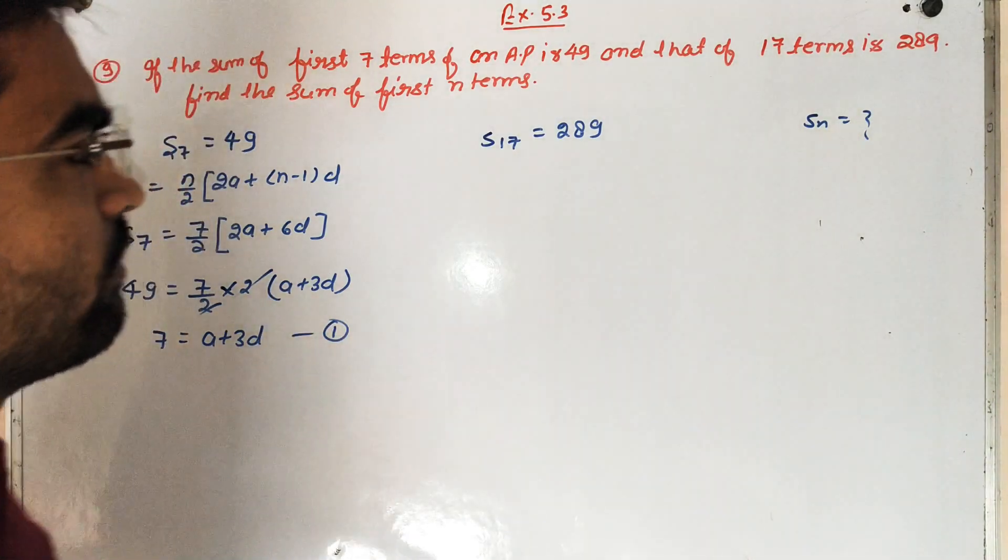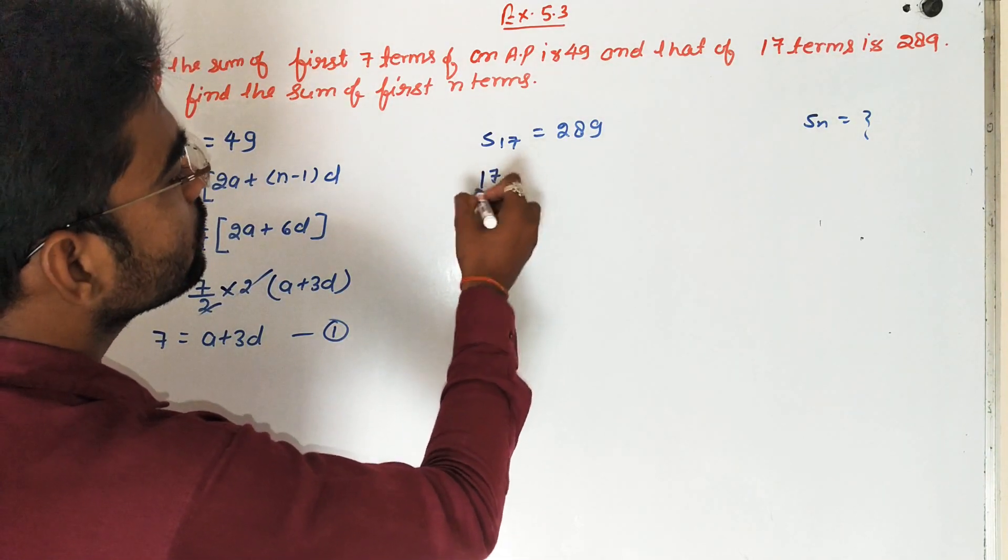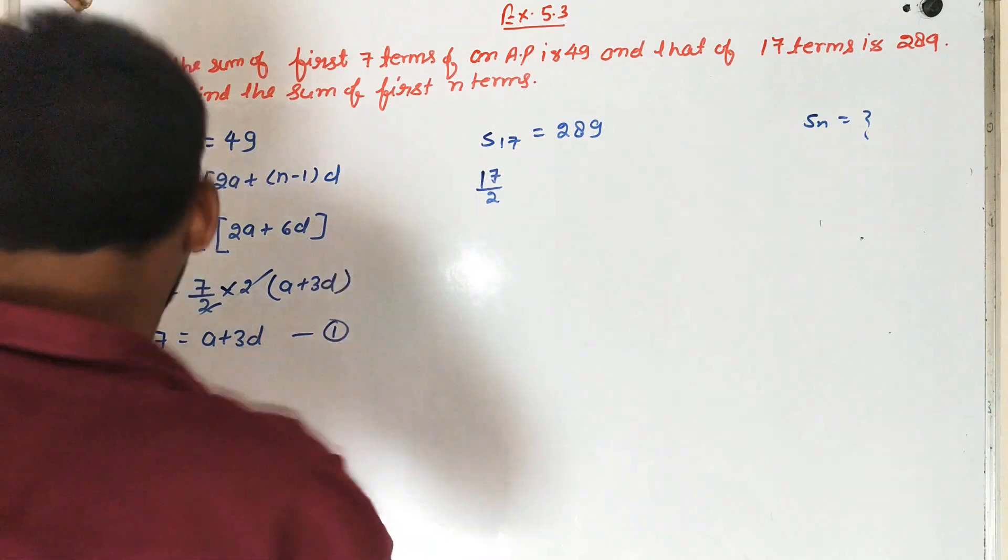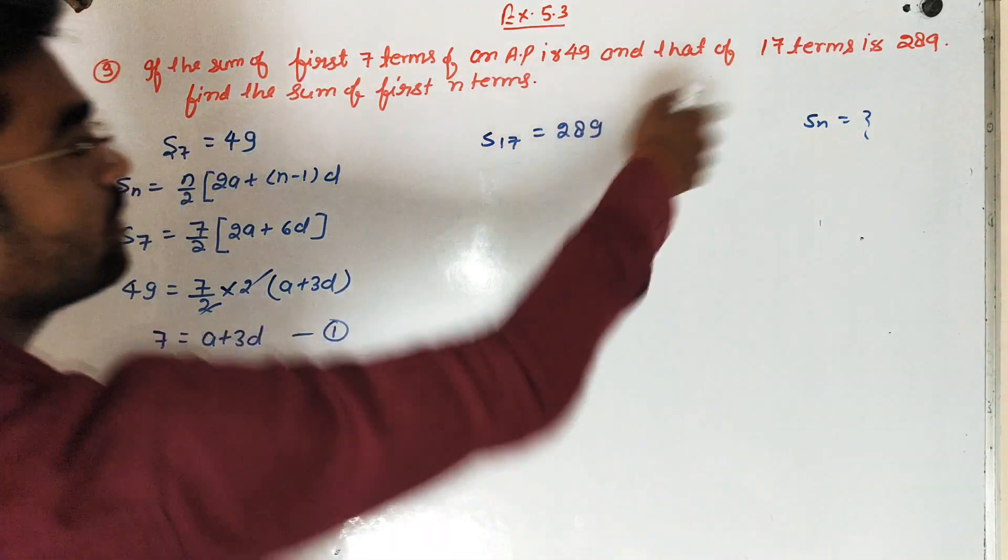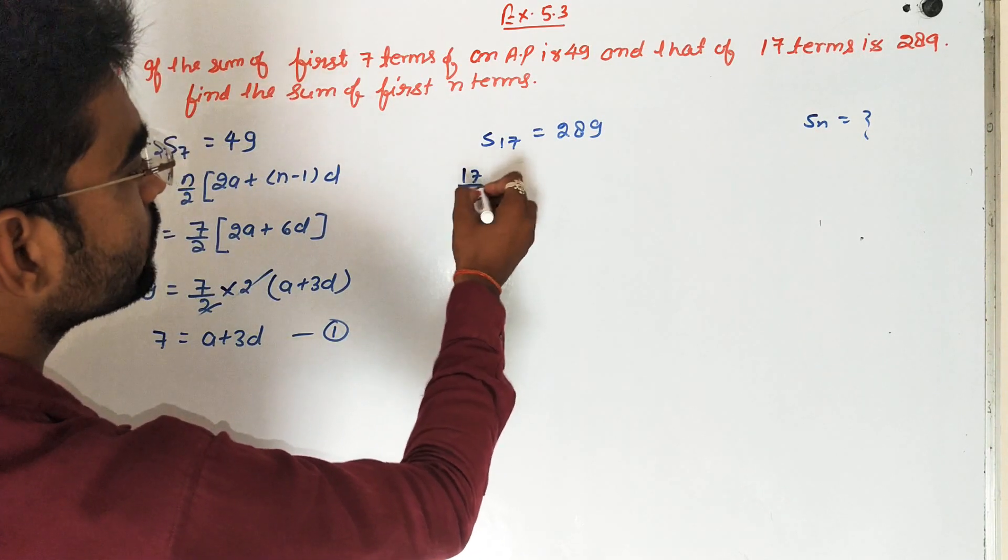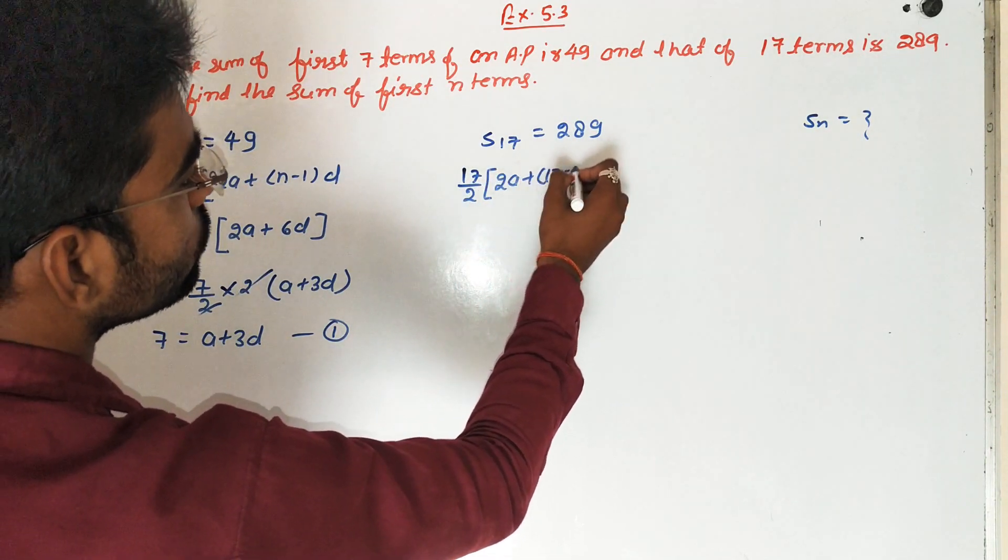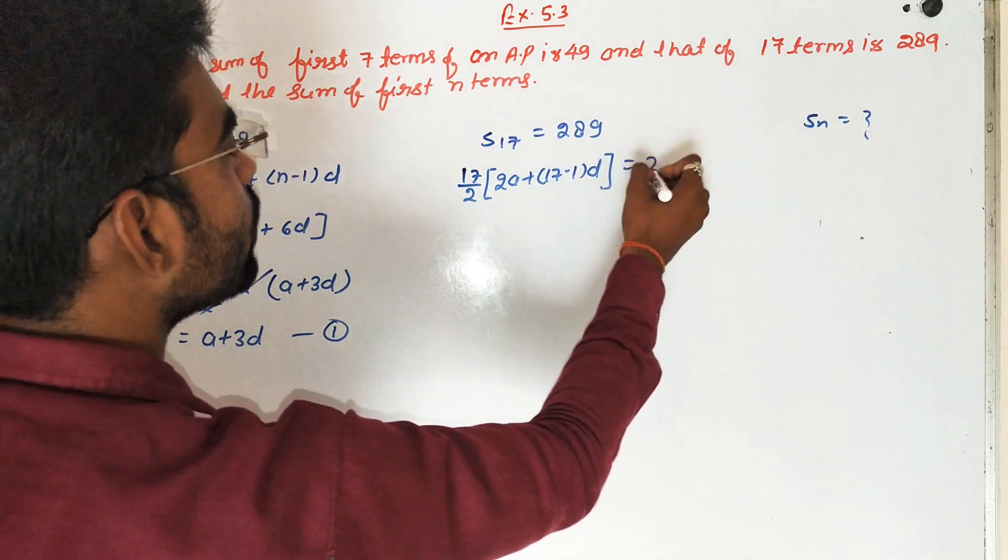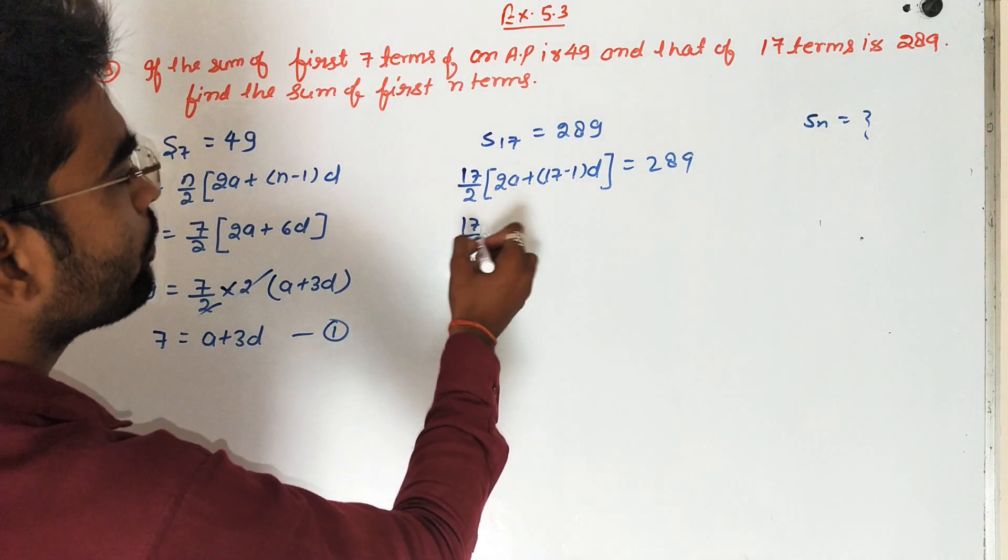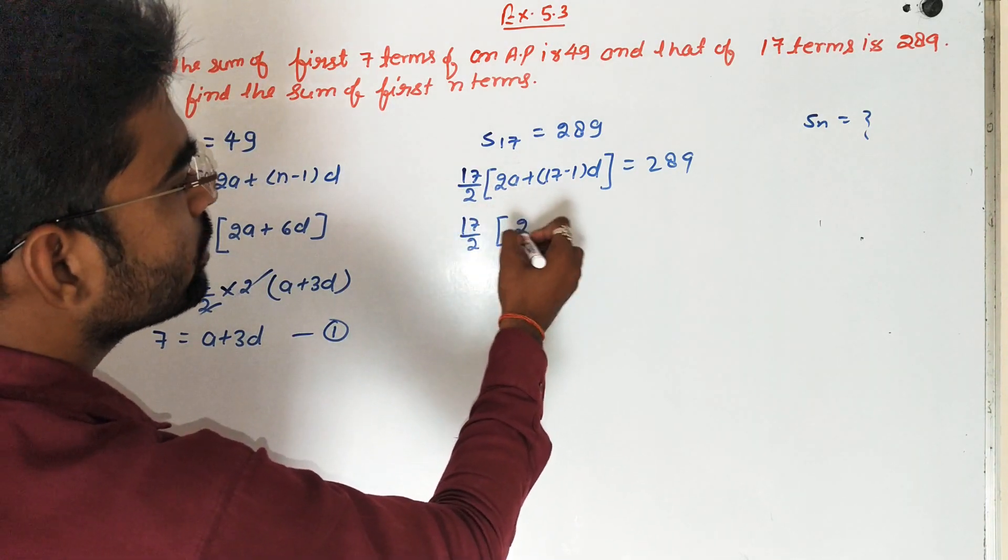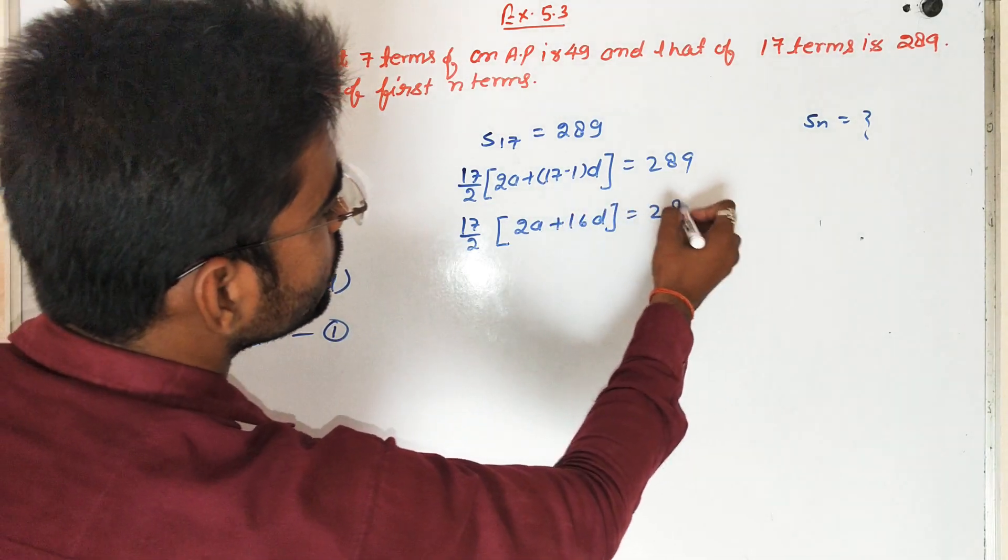Similarly sum of 17 terms, so direct form, 17 upon 2. So students, 17 upon 2, bracket 2A plus 17 minus 1 into D is equal to 289. So 17 upon 2, bracket 2A plus 16D is equal to 289.